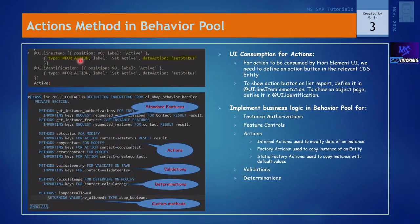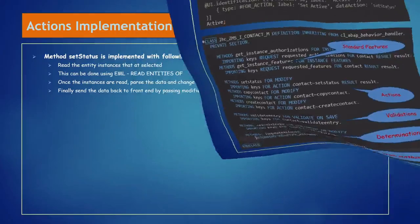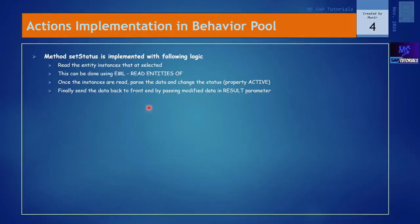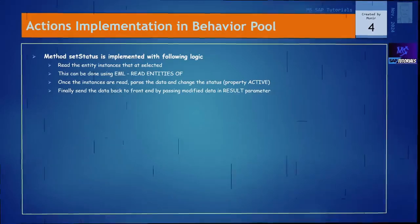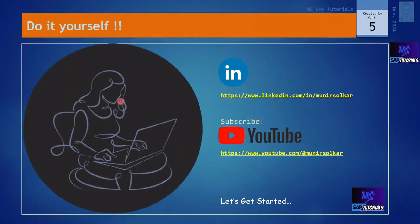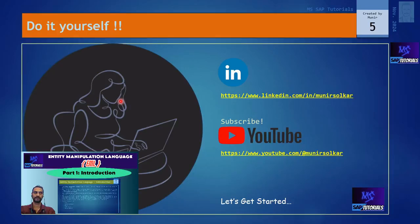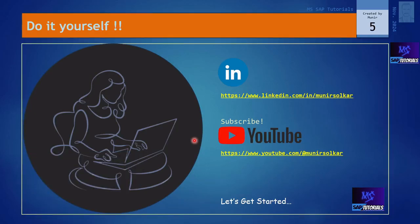We have to provide the action type for the line item, which will create one more button — this time for the 'Create Contact' button. Once we have given this in our behavior definition, we have to go and implement that method in our behavior pool by modifying it with a create command. If you don't know EML, I highly recommend you go and watch my earlier series on understanding EML — I will post the link in the description.